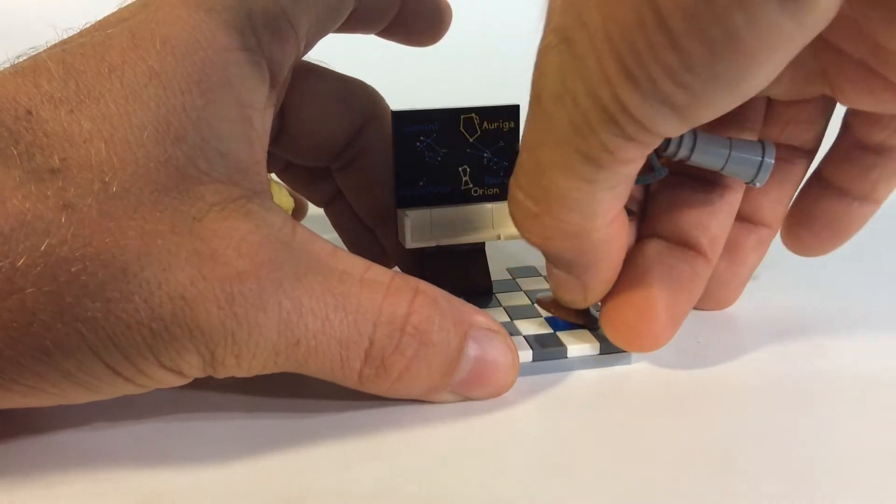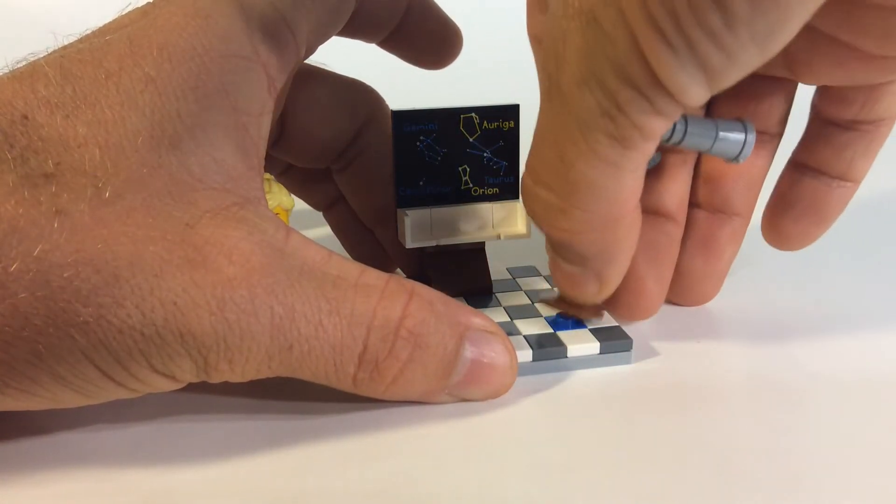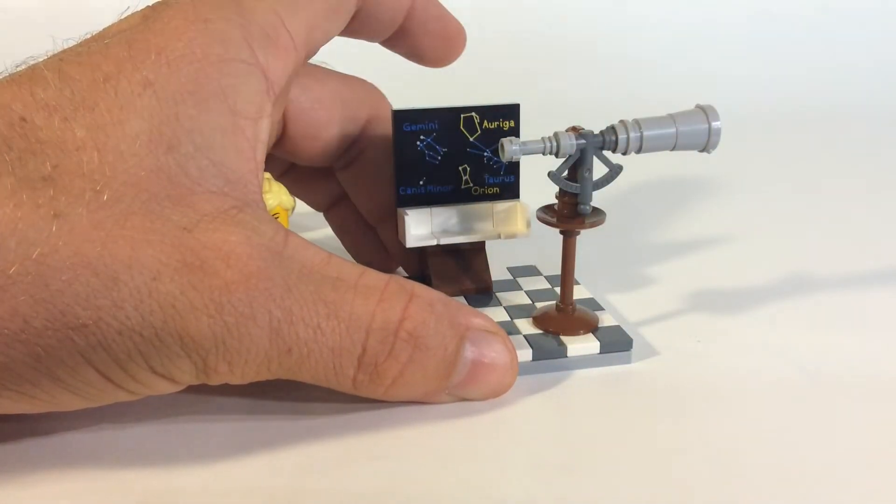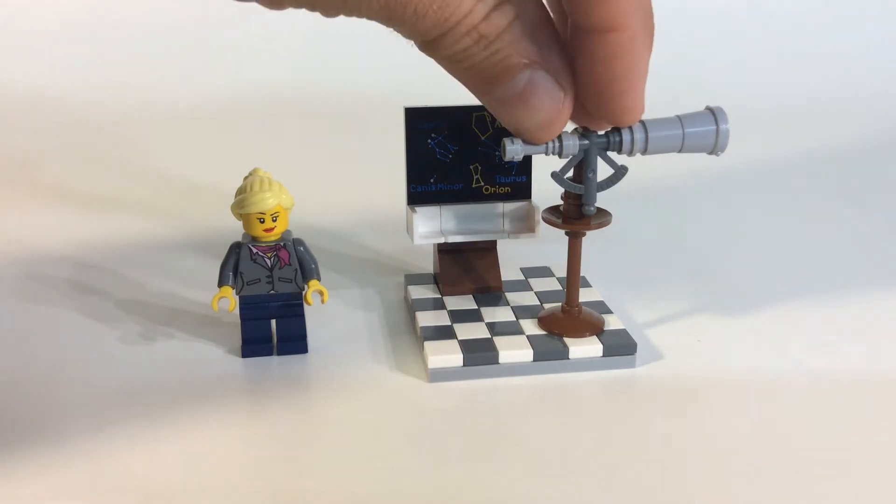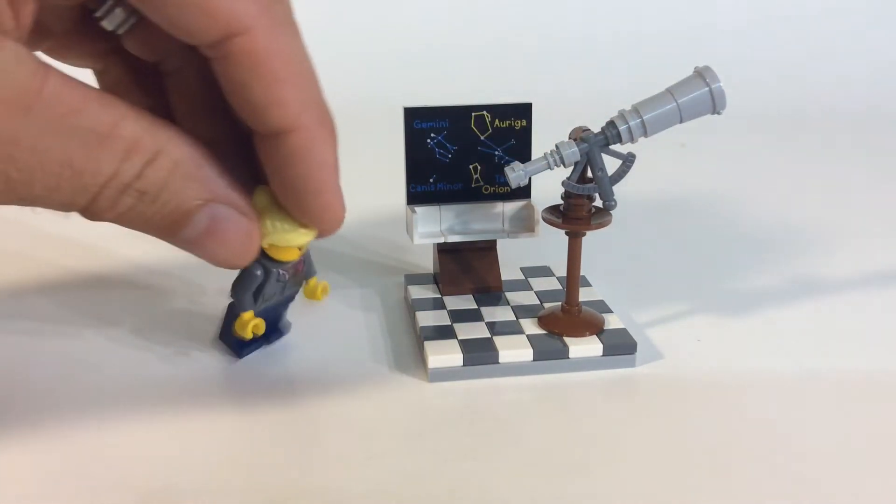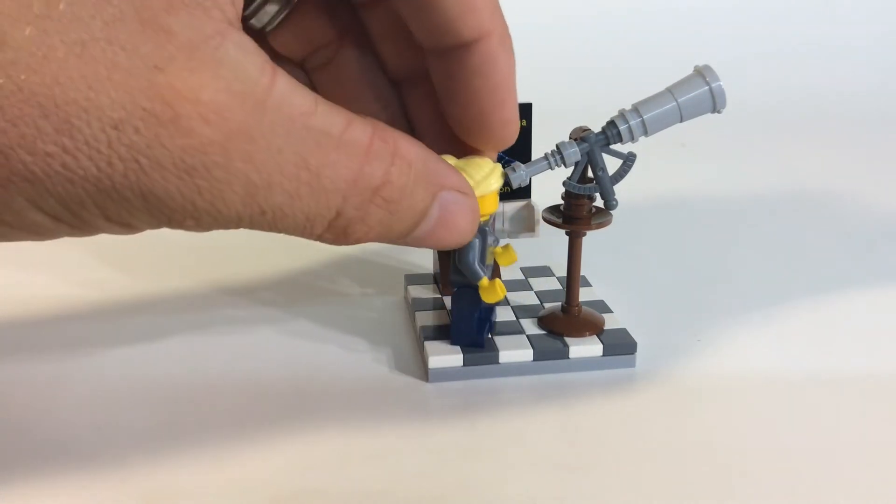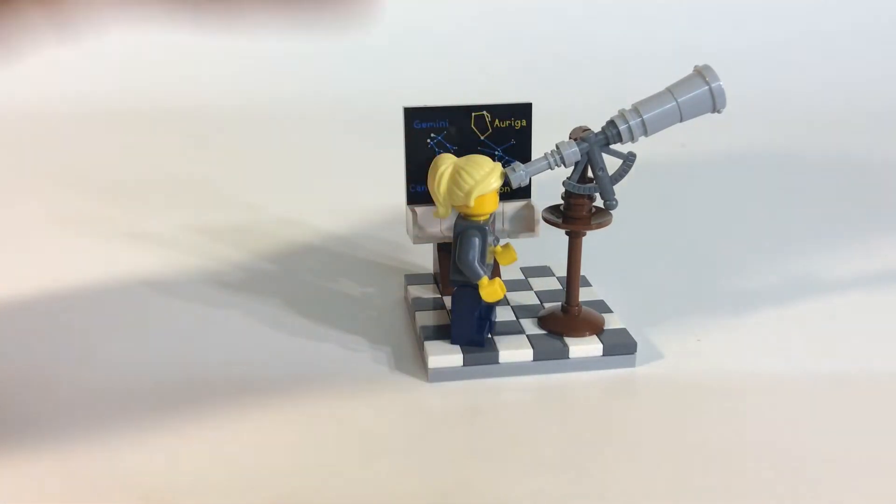There is a one by one plate underneath here with a stud on it so you can put that on there. I do like the effect with the telescope, the way it is kind of like a bucket. This does tilt, so you can place the minifig on there, but there's no studs for it.